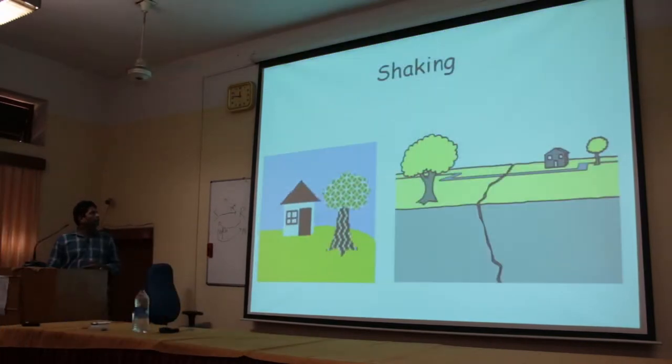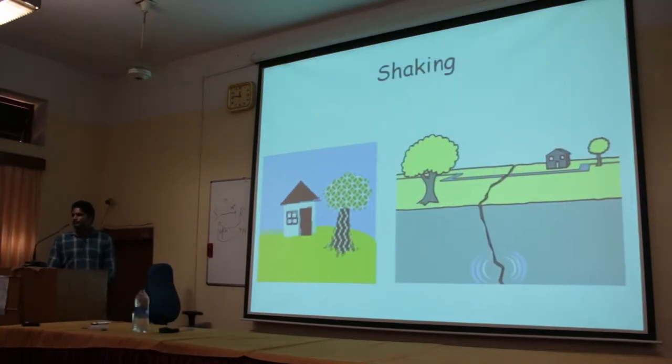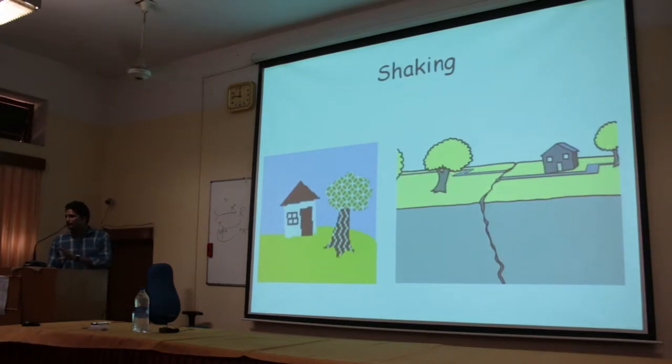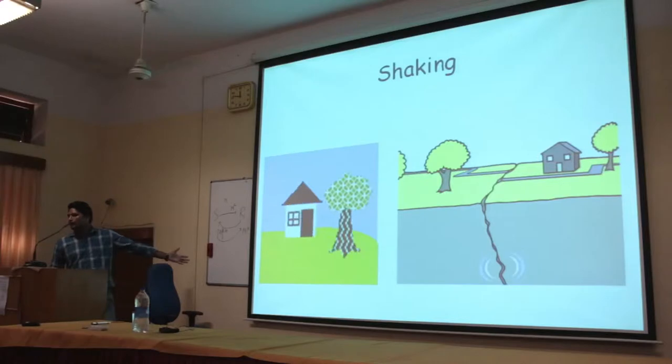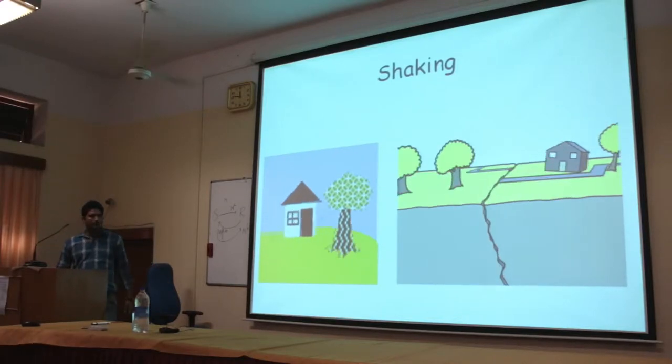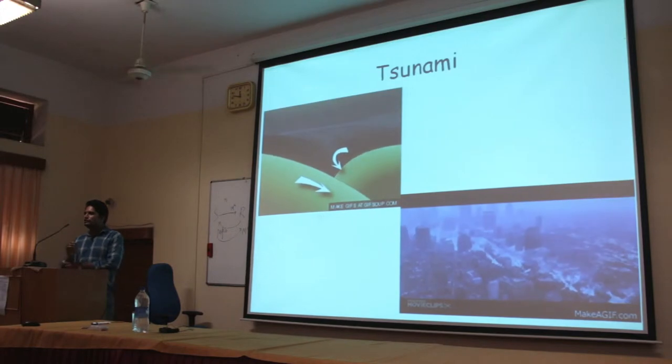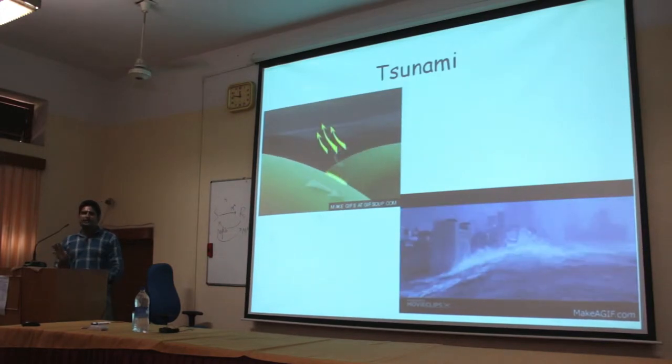What is shaking? When an earthquake occurs, certain types of waves are generated known as P waves and S waves. Due to the combination of these primary waves there is a generation of secondary waves which causes the ground shaking.